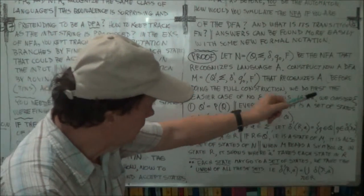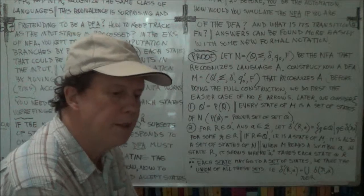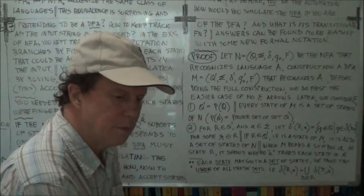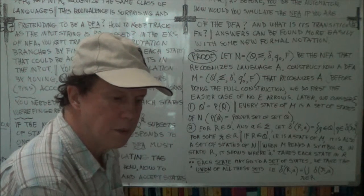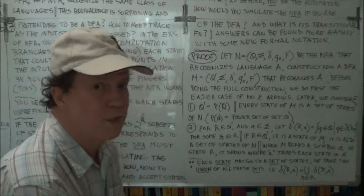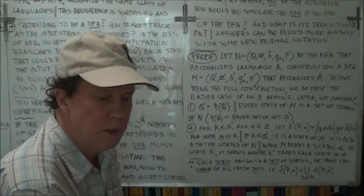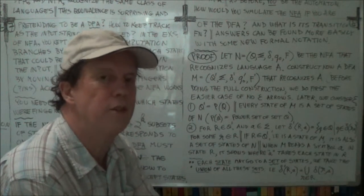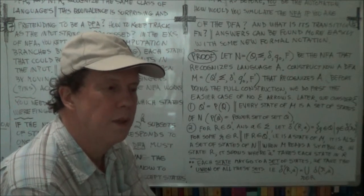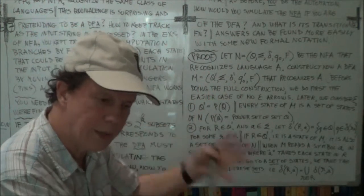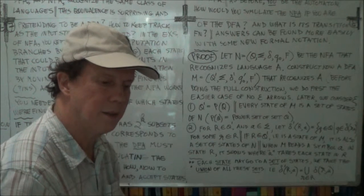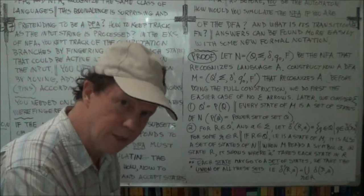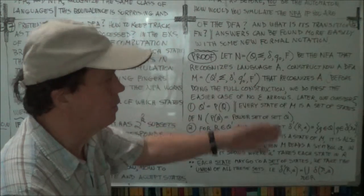Now I'm going to do this proof in two parts — the easier part first, and then we'll modify the first proof to a slightly more complicated case. The simpler case is when this NFA has zero epsilon transitions — no epsilon transitions. Once we've got that proof, it will guide us and motivate us to proving the more general case when your NFA does have epsilon transitions. So it'll be a two-part proof.